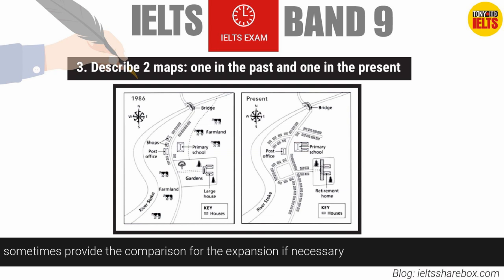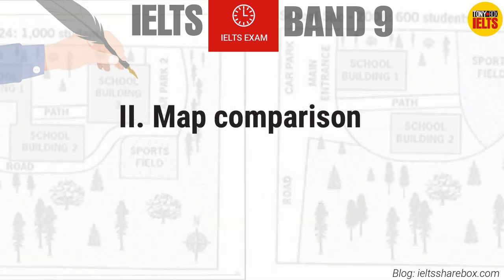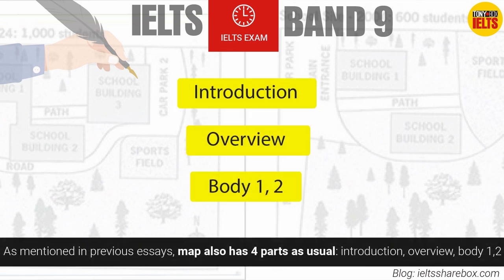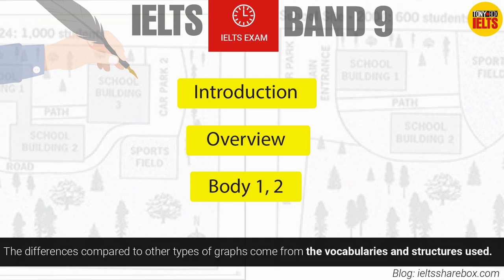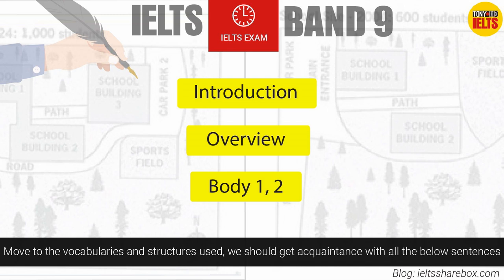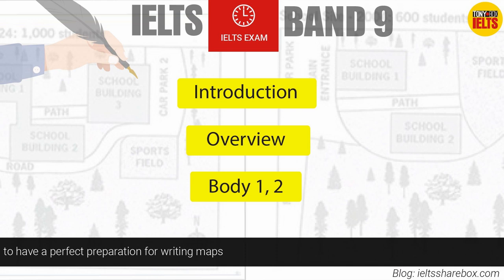This third type of question requires you to analyze the profound characteristics and sometimes provide comparison for the expansion if necessary. The tenses used are the past and the present. Like other types of graphs, the map also has four parts: introduction, overview, body 1, and body 2. The differences compared to other graph types come from the vocabularies and structures used.